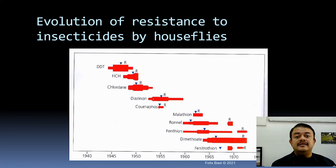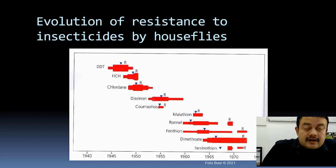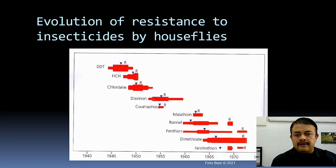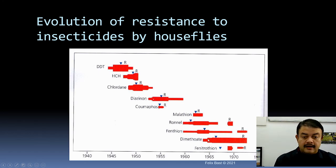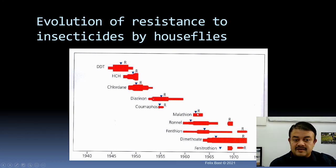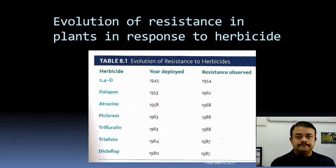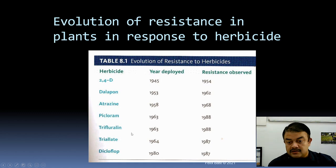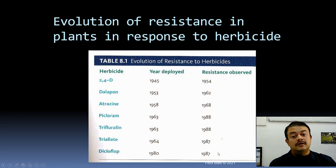The frequency of resistant varieties increased tremendously through natural selection — effectively an artificial selection pressure. The same story applies to other insecticides like HCH, chlordane, diazinon, malathion, and fenthion. Whenever a new insecticide is introduced, resistant variants soon emerge and the insecticide becomes ineffective — which is why we continuously develop new variants of insecticides and herbicides. For example, diclofop herbicide was introduced in 1980, and resistance was observed by 1987. All of these are evolution in action.